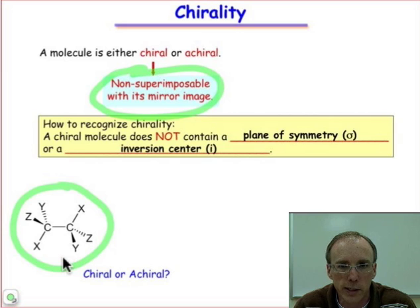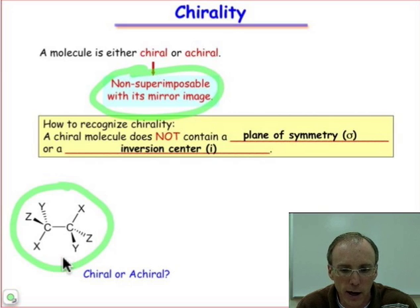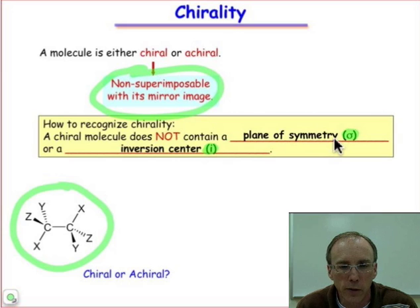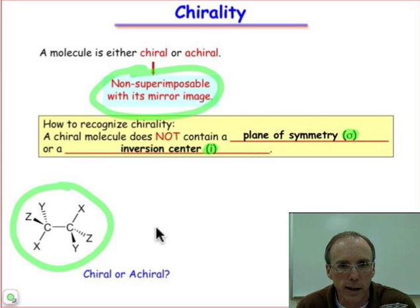All we need to do is identify whether or not the molecule, in any conformation we choose or can find, has an inversion center, i, or has a mirror plane, σ. If a molecule in any conformation has an inversion center or a plane of symmetry, that molecule is achiral. So if we find a plane of symmetry or an inversion center, we conclude that molecule is achiral.